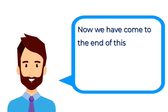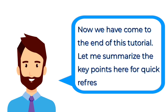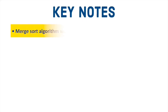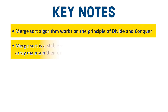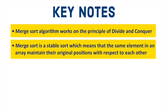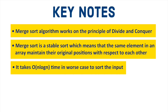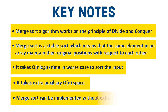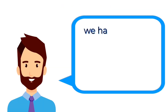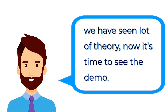Now we have come to the end of this tutorial. Let's summarize the key points for a quick refresh. Merge sort algorithm works on the principle of divide and conquer. Merge sort is a stable sort, which means that the same elements in an array maintain their original position with respect to each other. It takes O(n log n) time in the worst case to sort the input. It takes extra auxiliary O(n) space. Merge sort can be implemented without extra space for linked lists. We have seen a lot of theory now — it's time to see the demo.